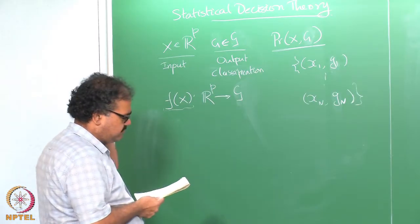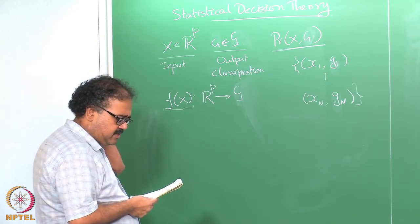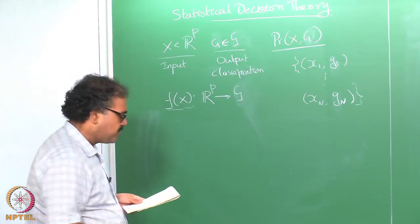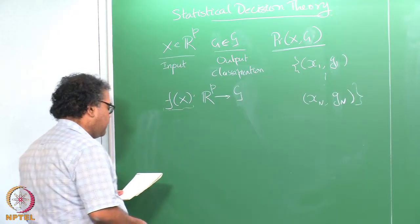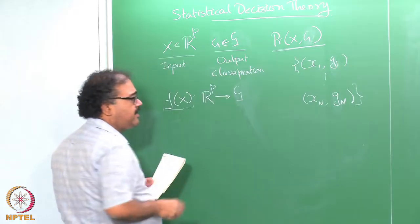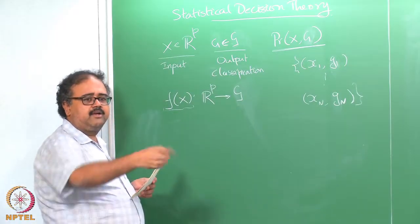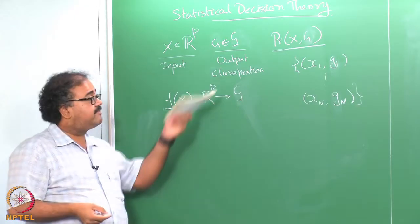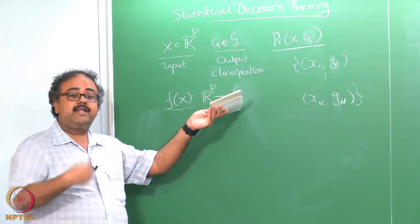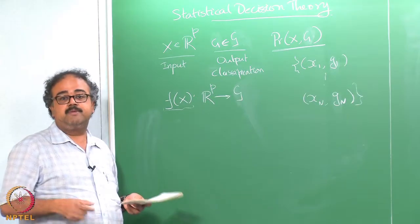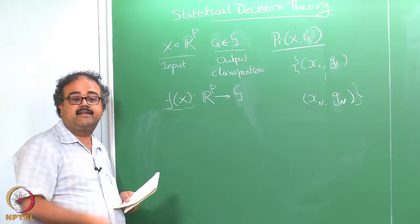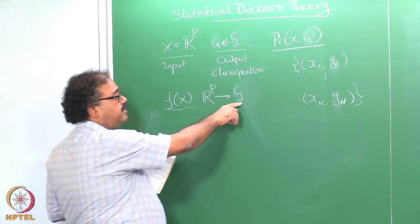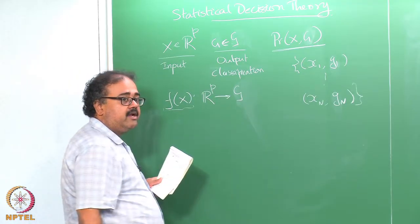The thing that we have to look at now is what is an appropriate loss function in this case, since we are talking about a discrete output. So I really cannot talk about squared error as a loss function. Even though in cases where the discrete values have been encoded as numeric outputs, people do use squared error and we will see that later. People do use squared error as an appropriate measure as long as your space G has been encoded numerically.